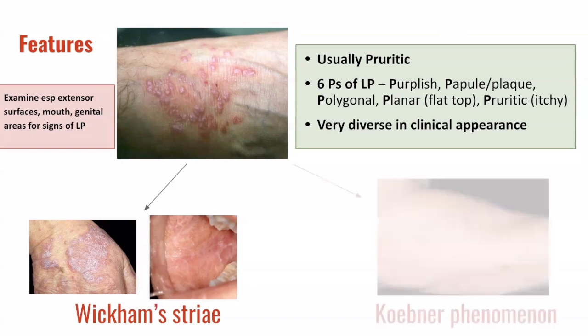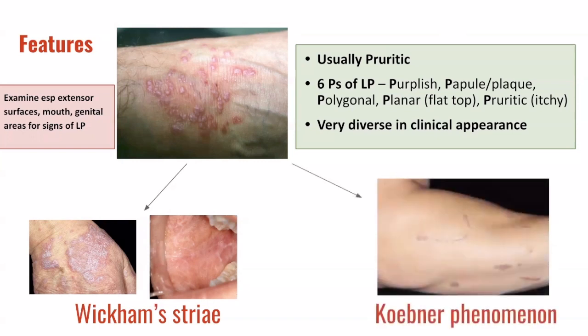It is also seen inside the mouth for lichen planus lesions, with a reticulate white lacy surface appearance. Lichen planus is also associated with what we call Koebner phenomenon, whereby trauma such as scratching on the surface of the skin can induce lichen planus lesions in the areas which have been traumatized.